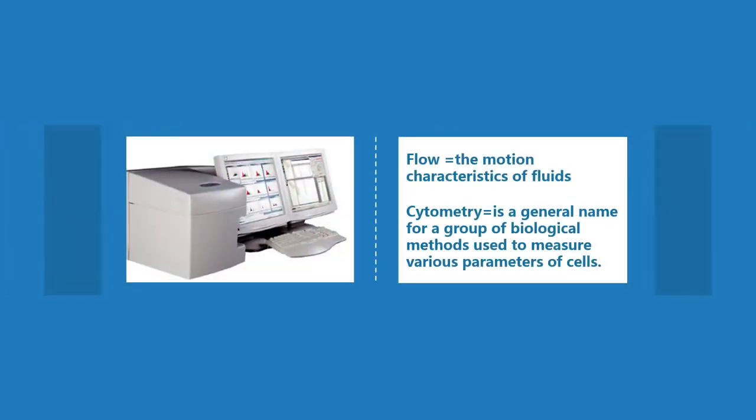Flow cytometers are laboratory instruments used to analyze the physical and chemical characteristics of particles in a fluid as they pass through at least one laser. Flow refers to the motion characteristics of fluids. Cytometry is a general name for biological methods used to measure various parameters of cells.